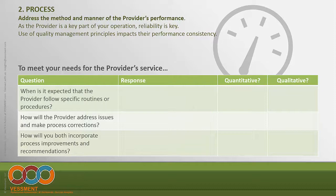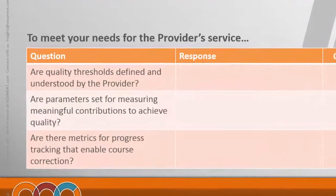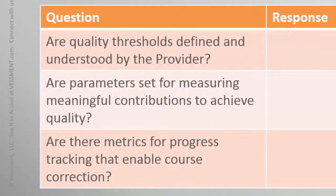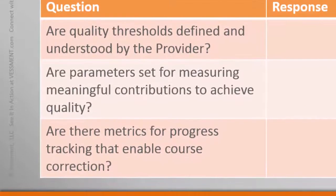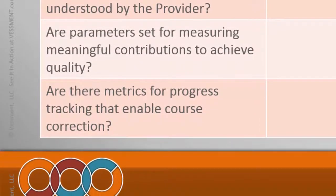The third area is around metrics — clarifying what you need from the provider and how you're going to measure it. It's really risky to just focus on the service levels in the contract because those are mandated and will be tracked. But looking only at the SLAs, you may miss opportunities for the provider to determine best practices and desirable results. Ask yourself: are there quality thresholds that need to be defined and understood by the provider? Are there parameters set for measuring meaningful contributions to achieve the quality you need? And are there metrics to track progress and enable course correction?